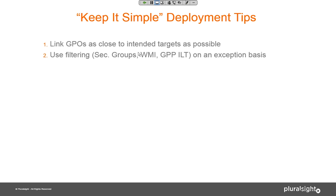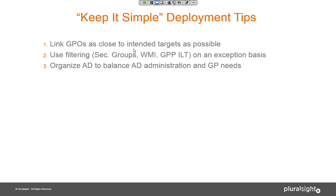Use filtering — security groups, WMI, or GP Preferences item-level targeting — on an exception basis. Don't rely on it for delivering settings; use it when you need to. Link as close to the target and use filtering on an exception — those two tips go together. Part of this depends on how you've organized your AD. Many companies have a flat structure with a single OU for all user accounts, making it hard to differentiate user settings by department without relying on security group filtering.